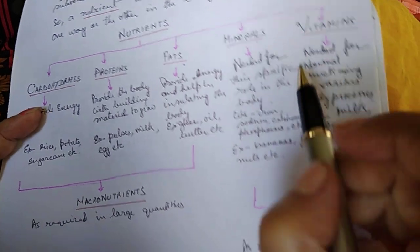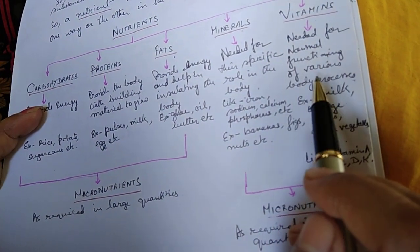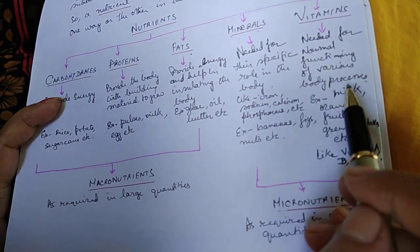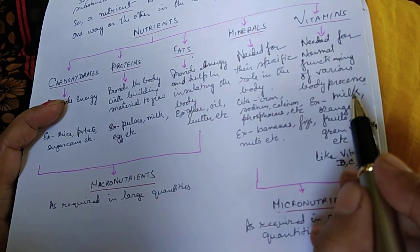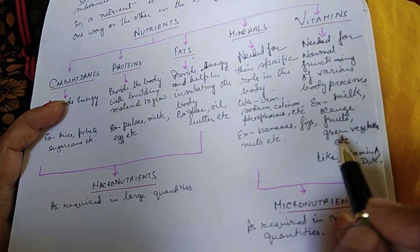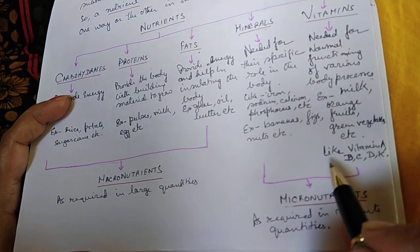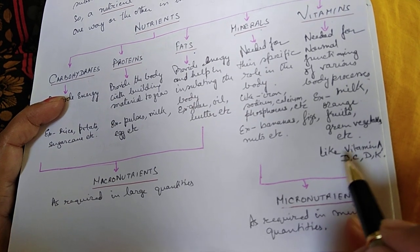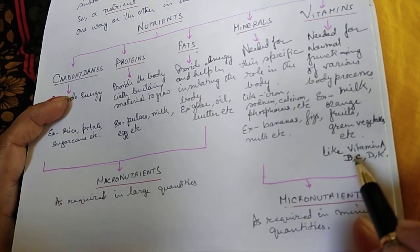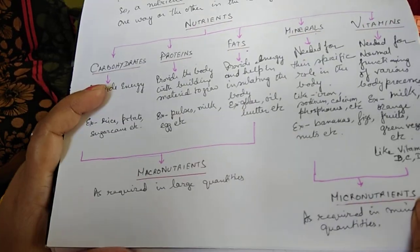Vitamins are needed for the normal functioning of our various body processes. We get them from milk, oranges, fruits, and green vegetables. The main vitamins are A, B, C, D, and K.